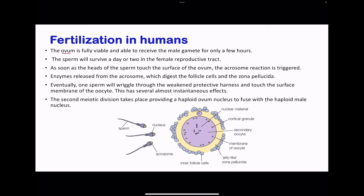During fertilization in humans, the ovum is viable for only a few hours to receive the sperm for fertilization to occur. However, the sperm can survive within the female reproductive tract for a day or more. As soon as the head of the sperm touches the surface of the ovum, acrosome reactions occur: the acrosomes of many sperm release enzymes, and these enzymes digest the follicle cells and the zona pellucida. Eventually, one sperm makes its way through to touch the membrane of the secondary oocyte. This causes an almost instantaneous change: the charge is reversed, becoming positive inside compared to the outside, preventing other sperm from entering.